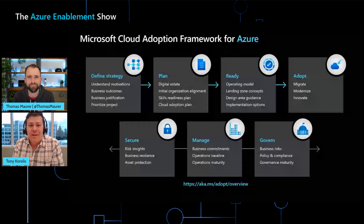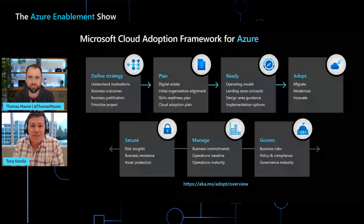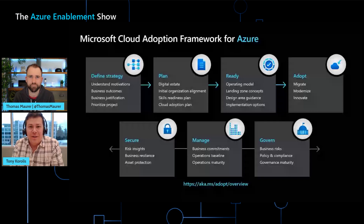Moving on to Plan — assessing your environment, figuring out exactly which applications are going to be in scope, and then what timing: when will they move to the cloud. Also really important is making sure that you have a skills readiness plan for your organization. Ready is also a really important step — this is mostly about how you're going to set up your landing zone in Azure such that your workloads land there in a well-architected destination.